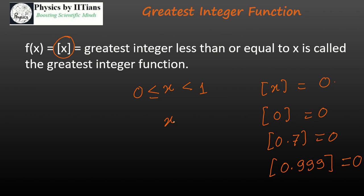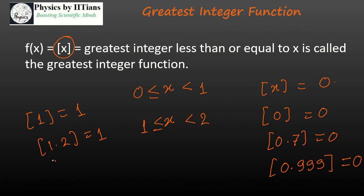Similarly, if you find the greatest integer for a value of x lying between 1 and 2, it will always give you an integer value equal to 1. The greatest integer of 1 is 1, greatest integer of 1.2 is also 1, greatest integer of 1.97 is also 1. So for all the ranges of x between two integers 1 and 2, it always gives you the least integer, that is 1. Similarly, for 0 to 1 range, it is always giving you integer value 0.